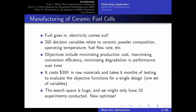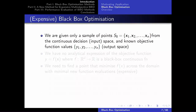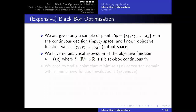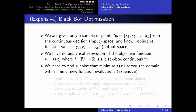This area is called black box optimization — specifically expensive black box optimization, where we cannot afford techniques that involve lots of function evaluations. Mathematically, we have a sample of n past experiments: each is a 200-dimensional decision vector with associated objective function values — say 5 objectives times 30 experiments. We have no mathematical expression for how the output depends on the input.